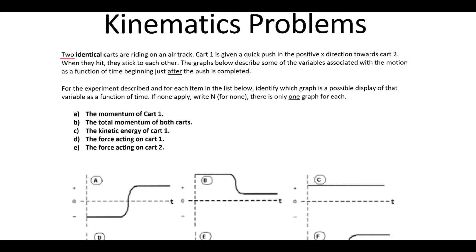The first key piece of information is it says two identical carts, both of mass M. So cart 1 is given a push in the positive x direction — essentially a cart of mass M with some velocity. It's going to collide with another object which we can assume is fairly stationary, and then the two objects stick together and go at v2.